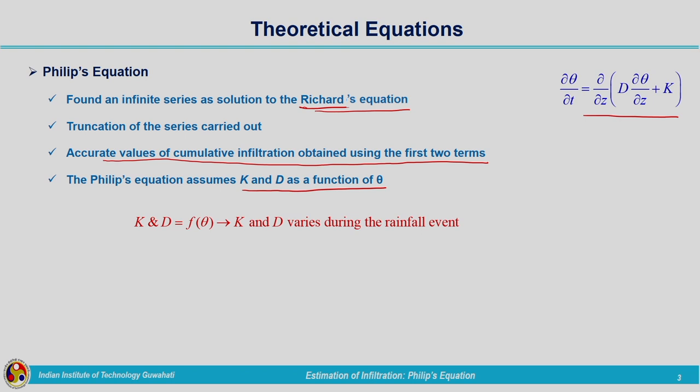Theta is the moisture content. Whenever infiltration is taking place, theta is changing — that is the soil moisture content present in the soil is changing because more and more water is infiltrating into the ground and the pores which are present in the soil will be filled with water. So the soil moisture present at the end of the infiltration process will not be the same as at the beginning. K and D vary during the rainfall event — hydraulic conductivity K and diffusivity D are functions of moisture content theta.